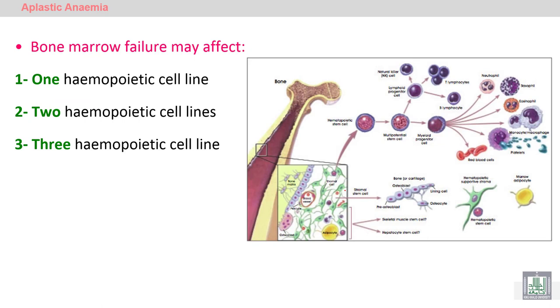Bone marrow failure may affect one hematopoietic cell line, which is called monocytopenia. Affecting two hematopoietic cell lines is called bicytopenia, and affecting three hematopoietic cell lines is called pancytopenia.